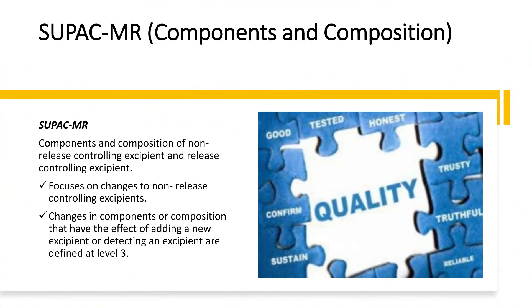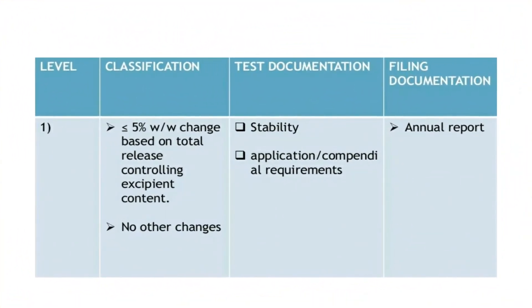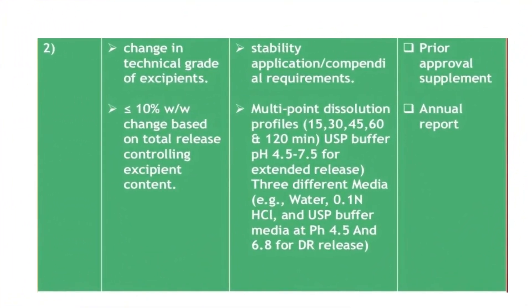For modified release dosage forms, the guidelines address components and composition of non-release controlling excipients and release-controlling excipients. They focus on changes to non-release controlling excipients, again classified into Level 1, Level 2, and Level 3. Level 1 includes changes where the concentration change is less than 5%; stability testing and pharmacopoeial tests are required, with results presented in annual reports to the FDA. Level 2 includes changes less than 10%; multi-point dissolution studies are required to prove bioavailability is unaffected, along with stability data and prior FDA permission for supplement filing.